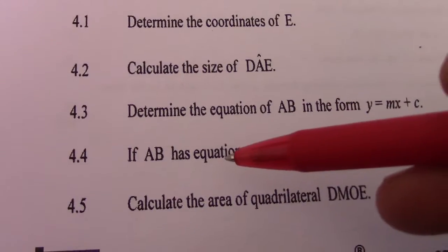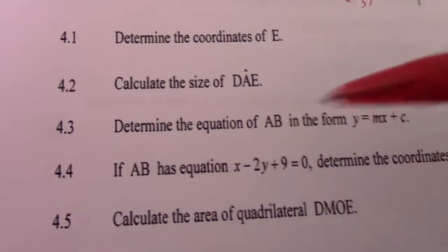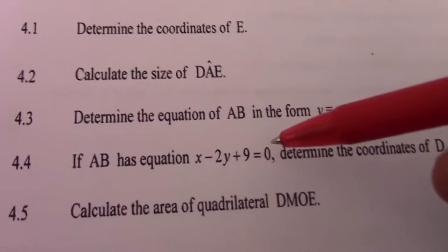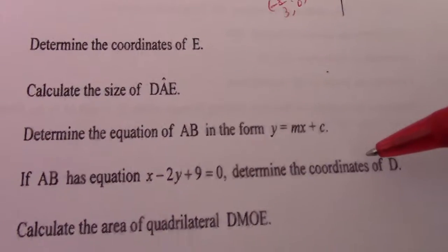Hello. Welcome. November 2013, Question 4. If AB has equation x minus 2y plus 9 equals 0, determine the coordinates of T.